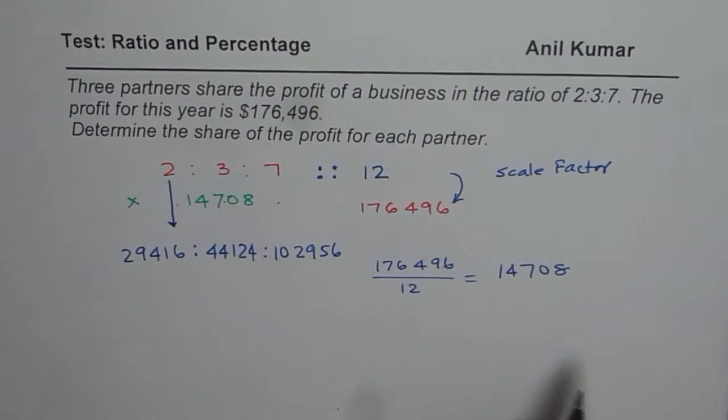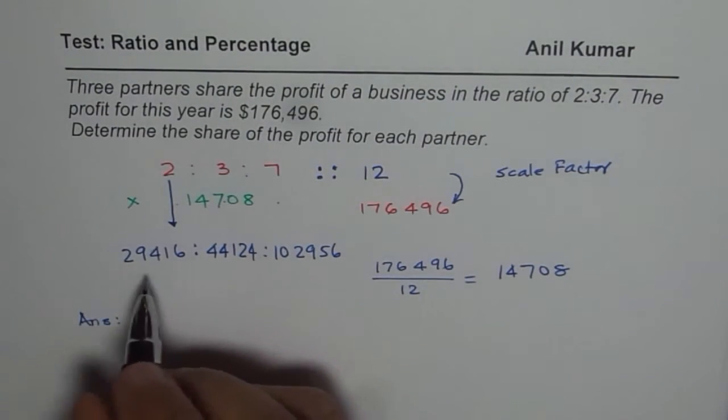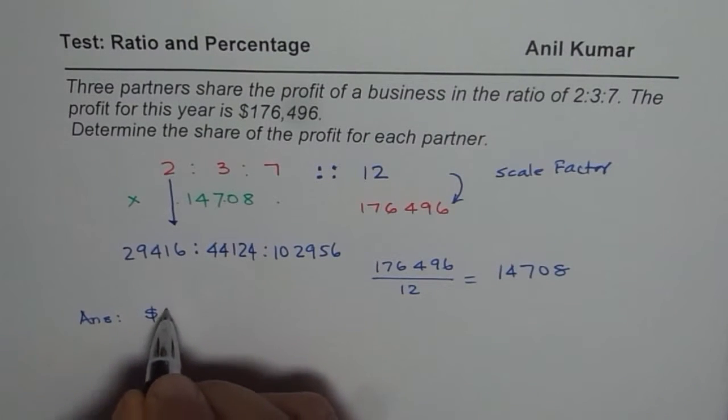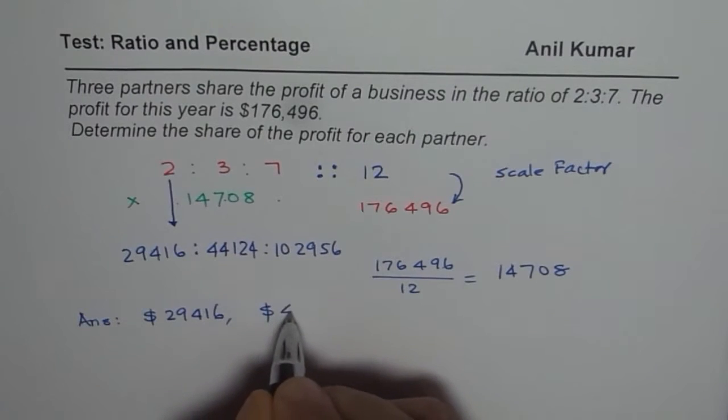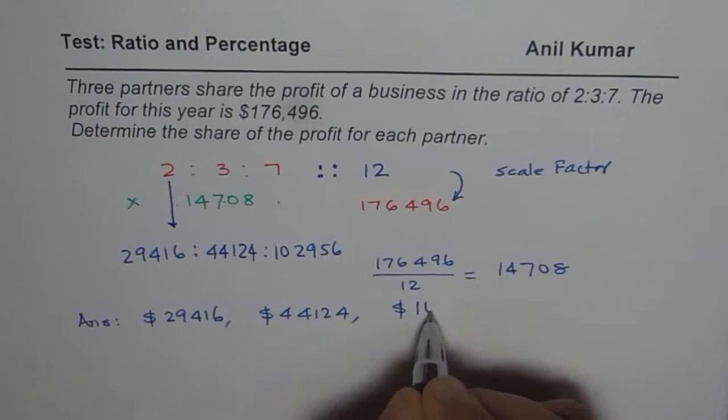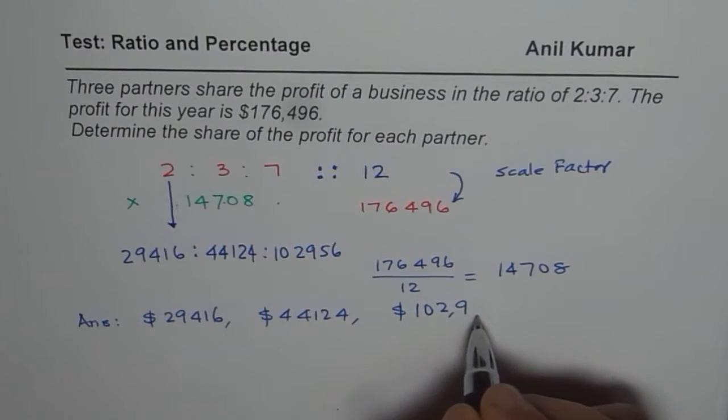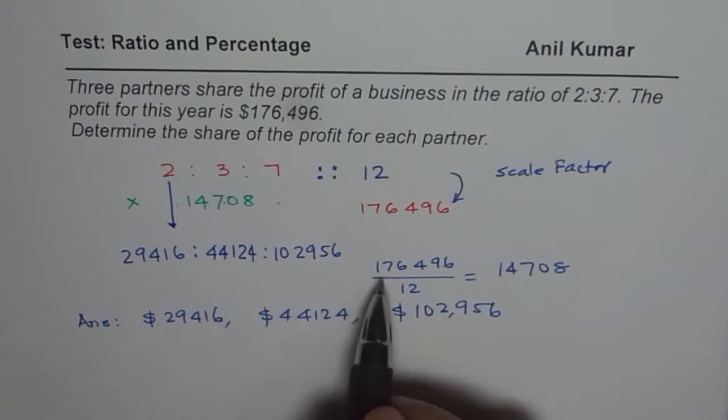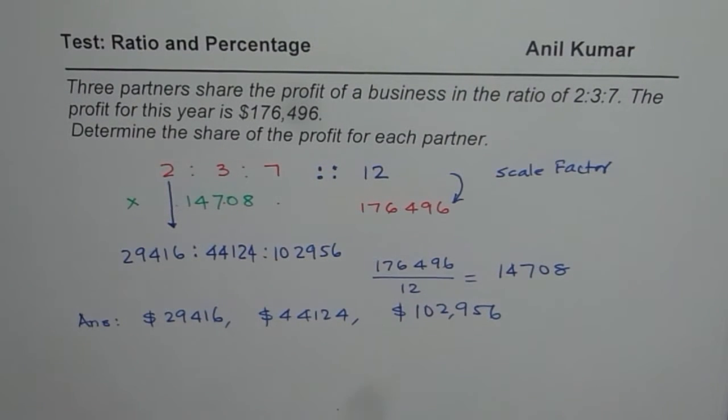So, that is the amount that each partner will get. So, you can write down the answer that the partners will get amounts of $29,416, $44,124 and $102,956. So, when you add these 3 values, you should get 176,496. That is your check. So, that is how you should be doing it.